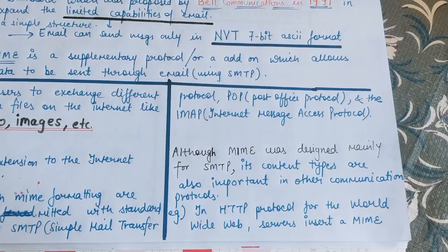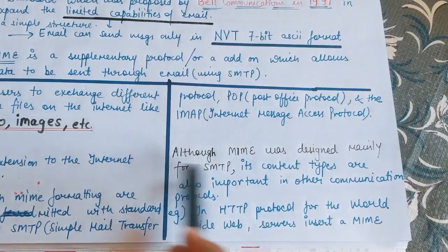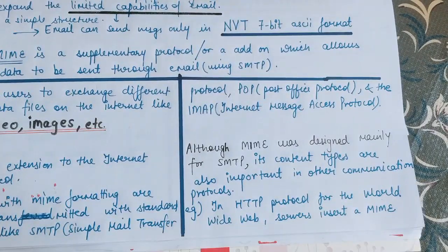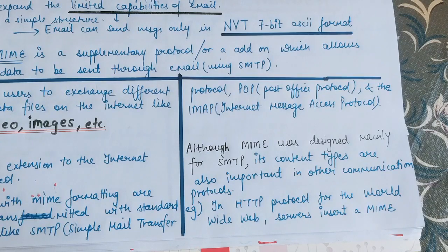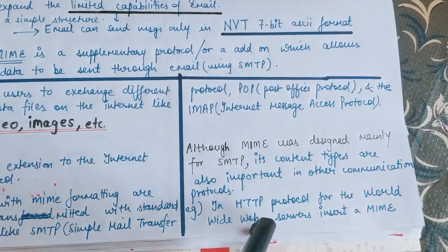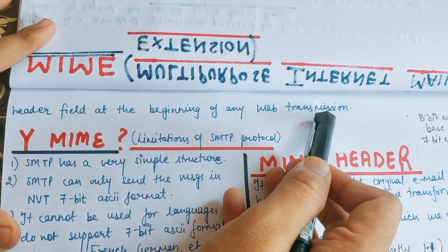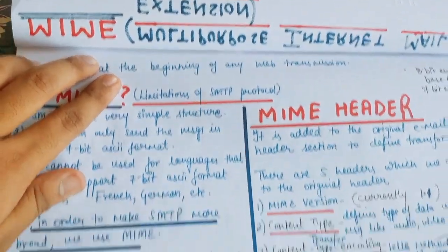It is not the case that we use MIME only with email protocols. We use MIME in other fields also. Although MIME was designed mainly for SMTP, its content types are also important for other communication protocols. For example, on the World Wide Web we use the HTTP protocol for sending data, and the server will insert a MIME header field at the beginning of any web transmission. So MIME protocol is also used in HTTP for web servers.